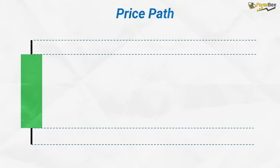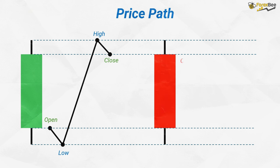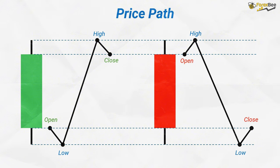Now let's look at the price paths of individual candles. In a bullish candle, the market opens at a certain level, then moves below the opening price to reach a low. After reaching this low, the market rises to make a high, and then closes above the opening price, but below the high, forming a small wick at the top. In a bearish candle, the market opens at the top, rises above the opening price to make the high, then moves down to reach a low. Finally, the market closes below the opening price, forming a bearish candle.